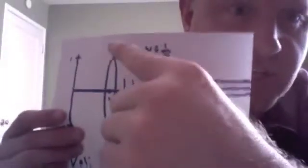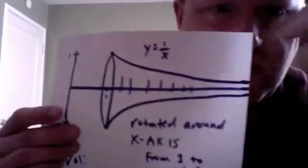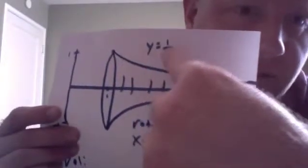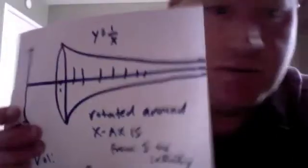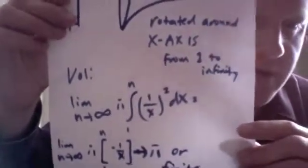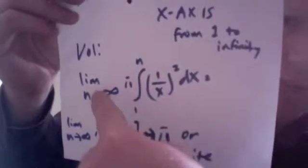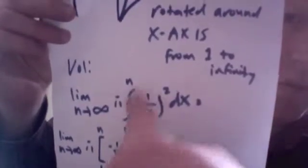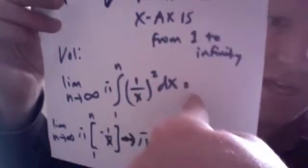Here it is. This shape does not exist in the physical universe — it exists in a mathematical, platonic construction. What I've done is take y equals 1 over x from 1 and extended it out to infinity, then rotated it around the x-axis. The volume is the limit as n goes to infinity of pi times the integral from 1 to n of 1 over x squared dx, which equals pi times negative 1 over x evaluated from 1 to n. That converges to pi — a finite value.